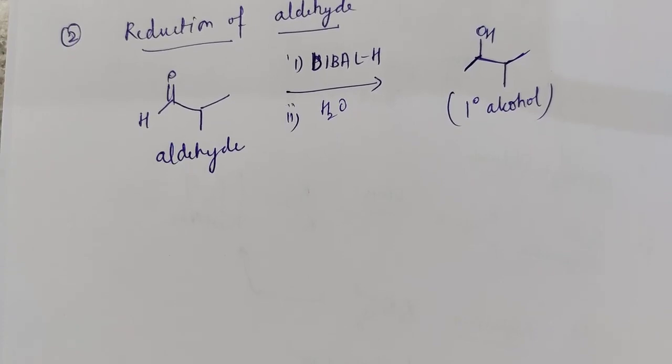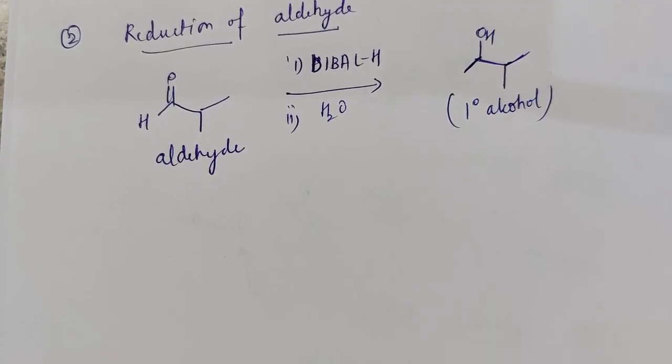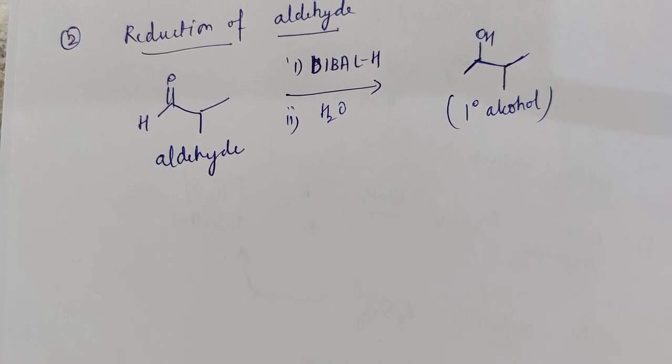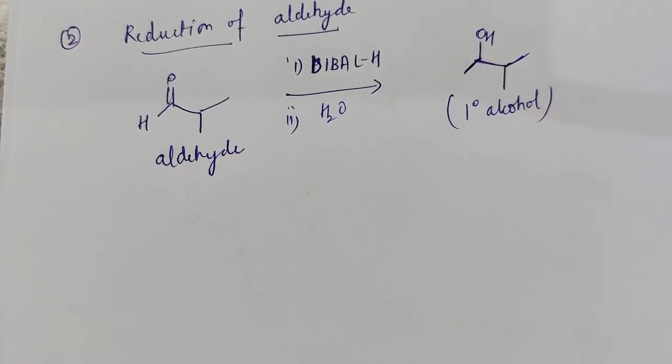So if you want to reduce one equivalent ester to aldehyde, you will be using only one equivalent of DIBAL-H. And you will have to maintain the reaction conditions for reduction of esters to aldehyde only. And not to carry out that reaction further, the condition required to maintain is temperature of minus 70 degrees.